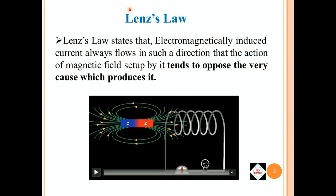Second Law is Lenz Law. Lenz Law states that electromagnetically induced current always flows in such a direction that the action of magnetic field set up by it tends to oppose the very cause which produces it. So, to explain Lenz Law, I have added a video which will give you a brief idea about Lenz Law.